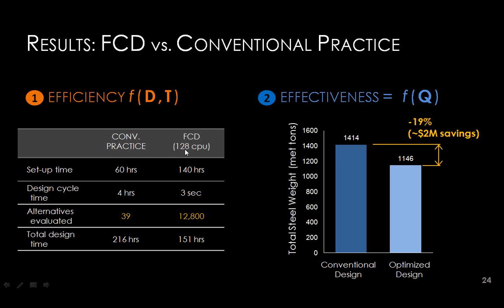The optimization uses 128 processors in a computer network to run in near-real-time. Instead of looking at around 40 options, we're looking at tens of thousands, and complete the entire process in less time than the conventional process. In terms of product quality, we were able to reduce the weight by roughly 20%. With two symmetrical roof structures on this stadium, the total cost savings is around $2 million — significant savings achievable on large steel structures.